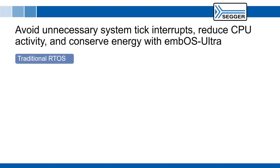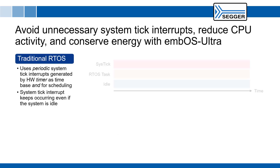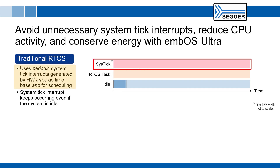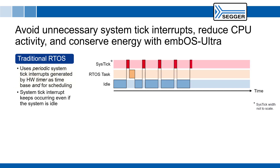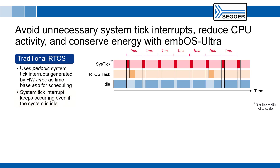Traditional real-time operating systems, including Seger's MBOS, use periodic system tick interrupts generated by a hardware timer as both the time base for the RTOS as well as for scheduling. In most applications, the system tick interrupt occurs every millisecond and keeps occurring even if the system is idle. This periodic system tick interrupt wastes computation time when no time-based action is required for multiple consecutive system ticks.